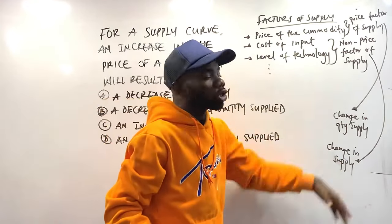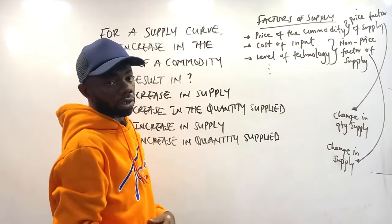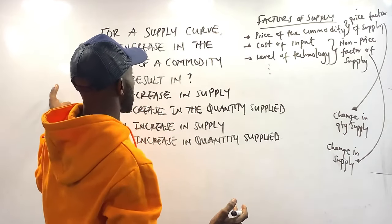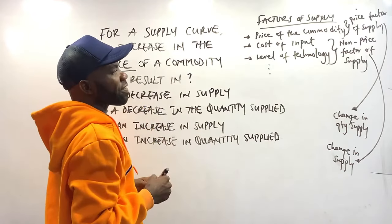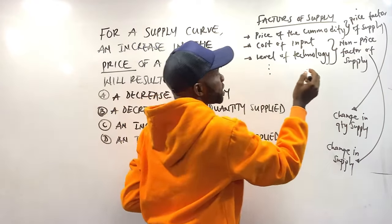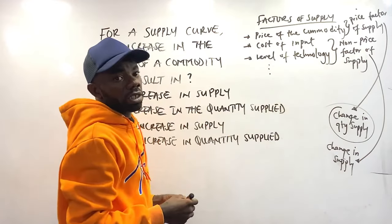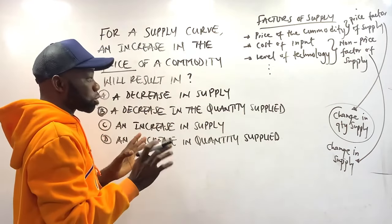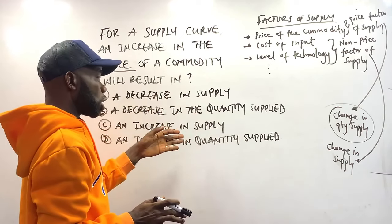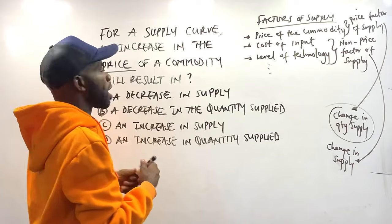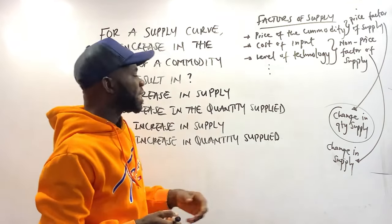Having this knowledge, we bring it back to the question. The examiner is talking about an increase in the price of a commodity. Once price is involved, we're dealing with change in quantity supplied. Option A says a decrease in supply — no. A decrease in supply cannot be the answer because that's part of change in supply, not change in quantity supplied.